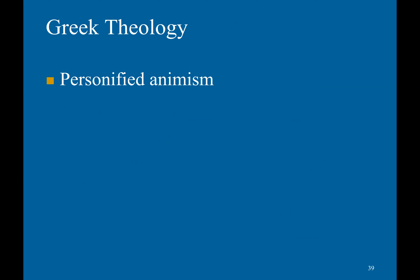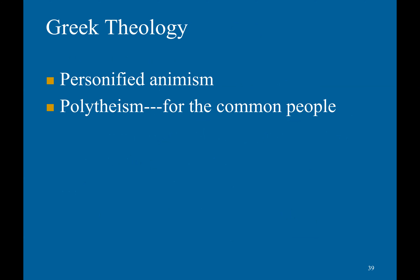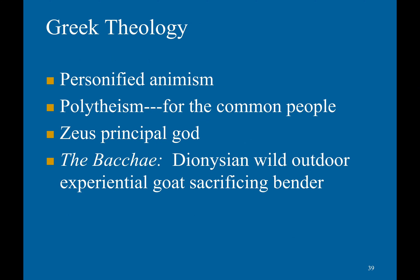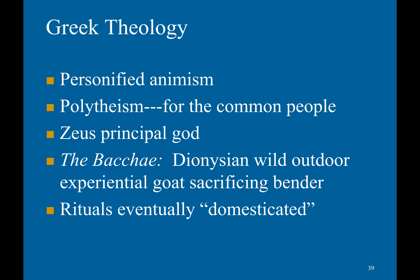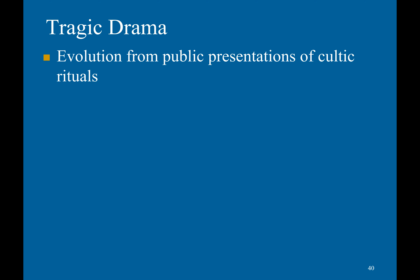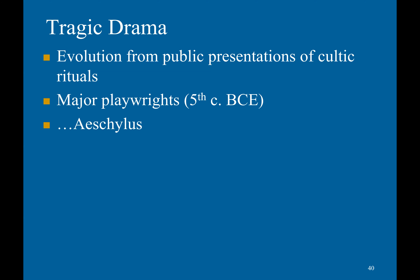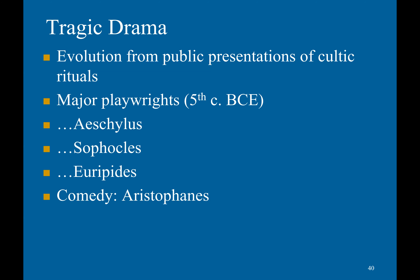Greek theology emphasized personified animism — basically, if it moves, it's a god. There was polytheism for the common people, with Zeus as the principal deity. An example of religious ritual would be the Dionysian wild outdoor festival involving goat sacrificing — essentially a wild, orgy-like festival. Eventually these rituals were domesticated. Tragic drama evolved from public presentations of cultic rituals, with major playwrights in the 5th century BCE: Aeschylus, Sophocles, and Euripides, with comedy by Aristophanes.